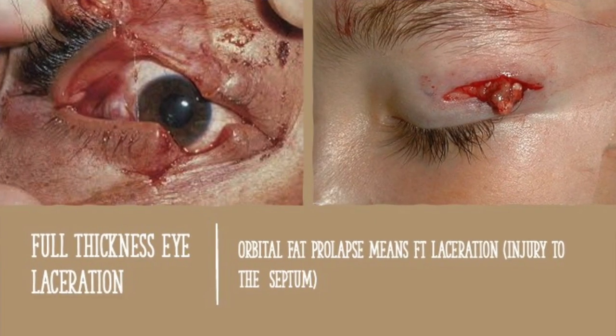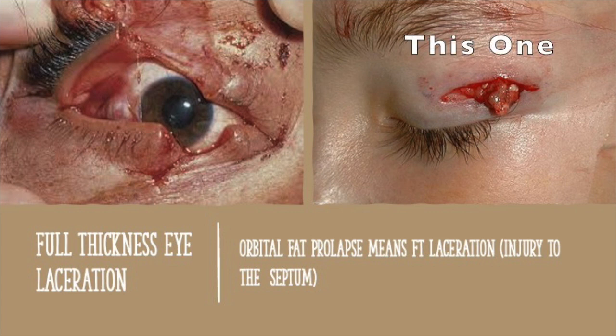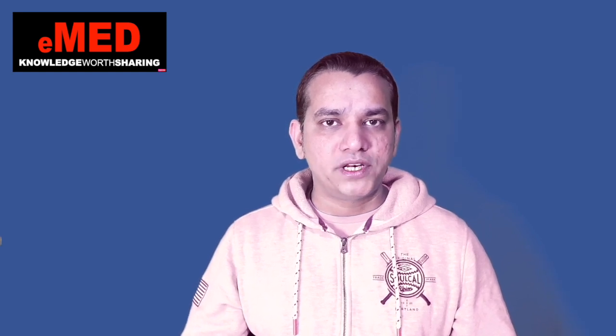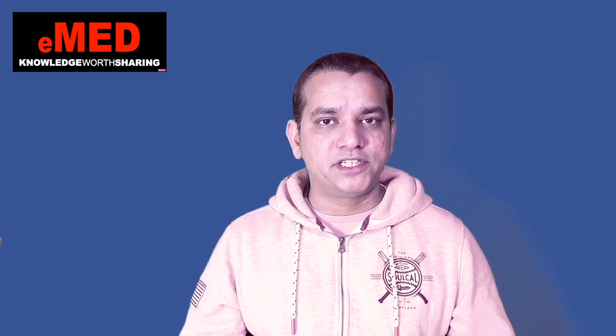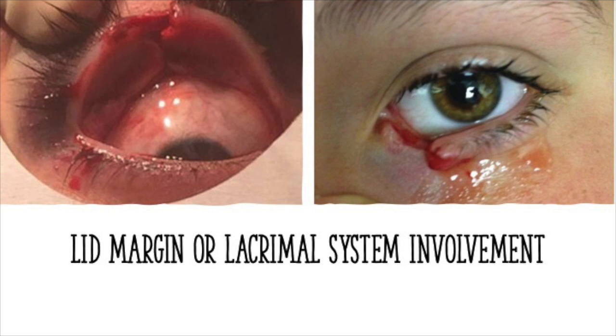How do you diagnose a full thickness laceration of the eyelid? If clearly obvious, you will see a full thickness laceration as shown in the image on your right. In the image on the left — the same image from our earlier scenario — you can see fat protruding through the laceration. The fat pad is normally below the septum, so if fat is coming out, the septum has been lacerated, making this a full thickness laceration. If the lid margins or nasolacrimal system are involved, these lacerations must be handled by the eye surgeons.